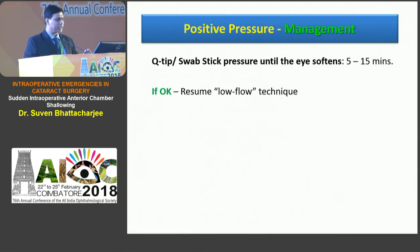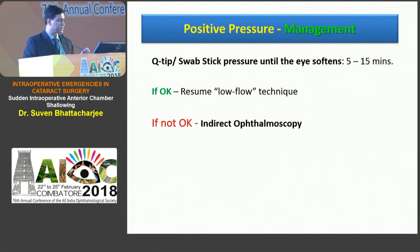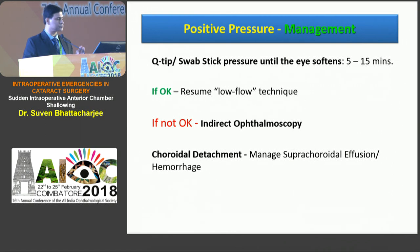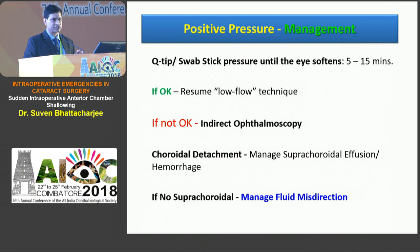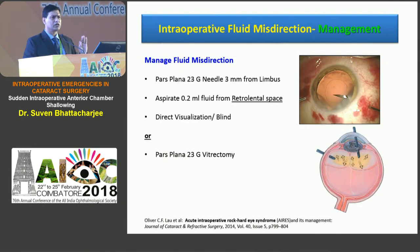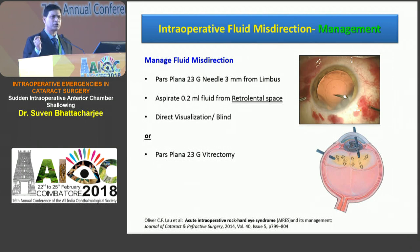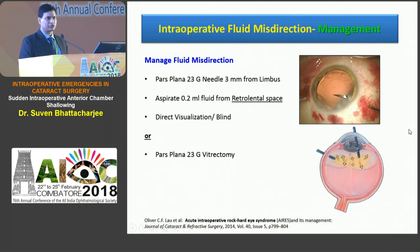If you apply pressure for five to ten minutes and the eye normalizes, resume a low-flow technique. If it's not okay, do indirect ophthalmoscopy to assess for choroidal detachment and manage suprachoroidal effusion or hemorrhage accordingly. If there is no suprachoroidal involvement, you are managing fluid misdirection syndrome. As described in the Journal of Cataract and Refractive Surgery, you need to insert a 23-gauge pars plana needle and aspirate 0.2 ml of fluid from the retrolenticular space, or perform a small-core 23-gauge pars plana vitrectomy to address the fluid.